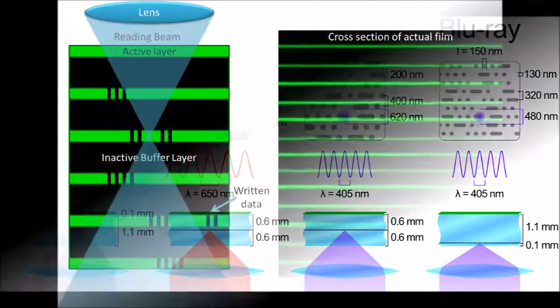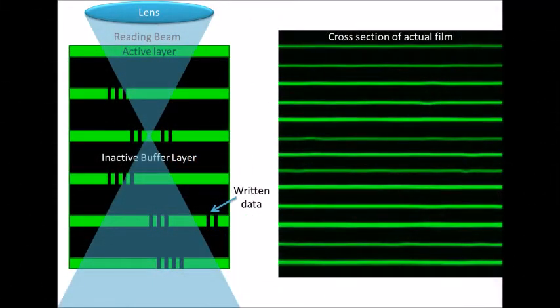Our technology also utilizes these critical advancements in optics, but innovatively increases capacity by expanding to the third dimension. We produce a multi-layer film with dozens of data layers, separated by transparent buffer layers, which can be written with existing Blu-ray optical technology.